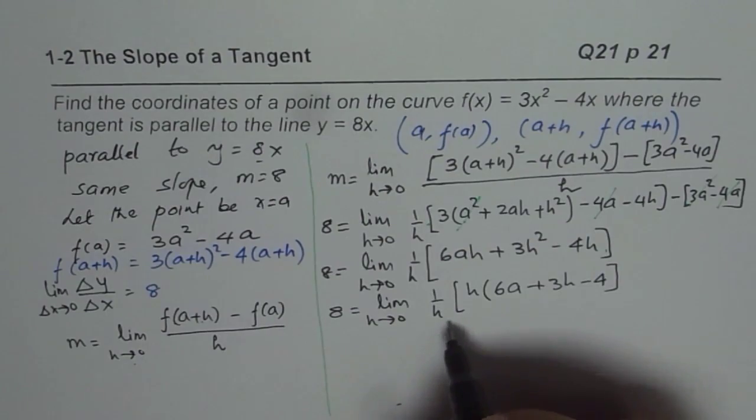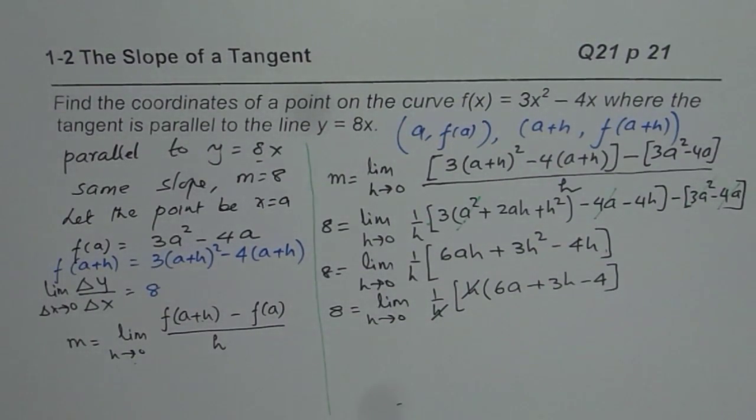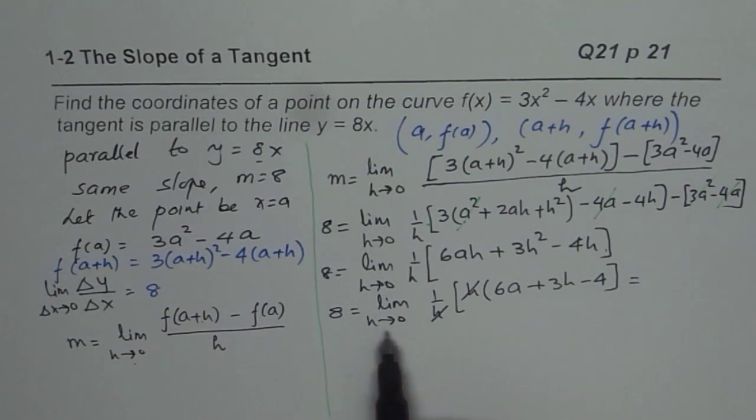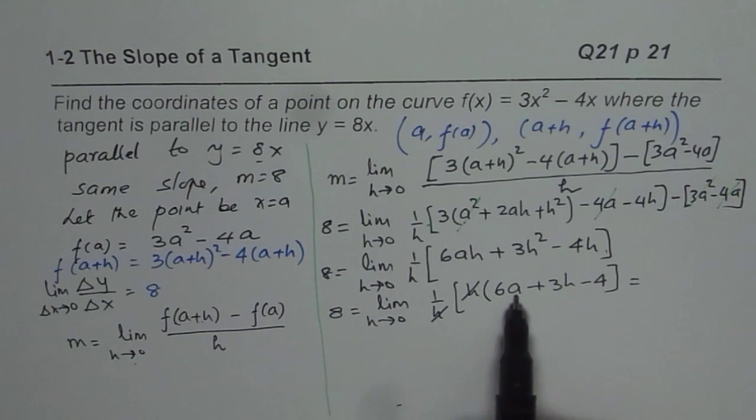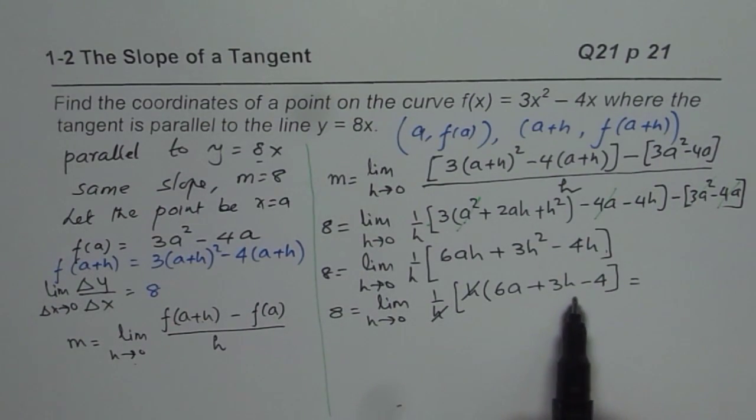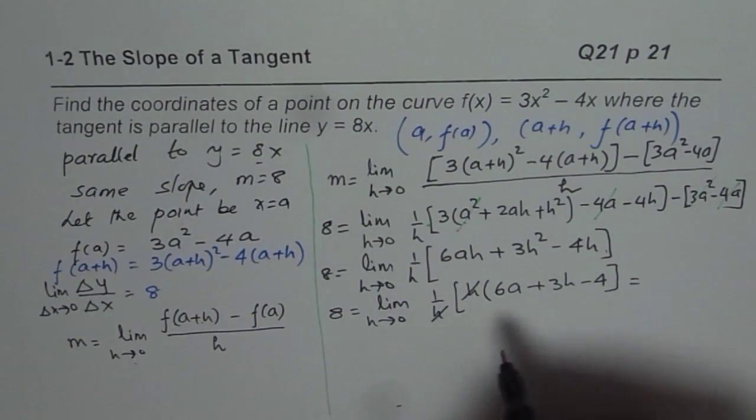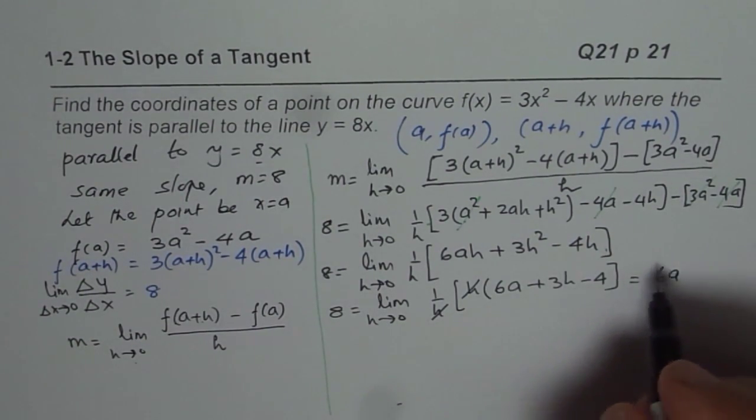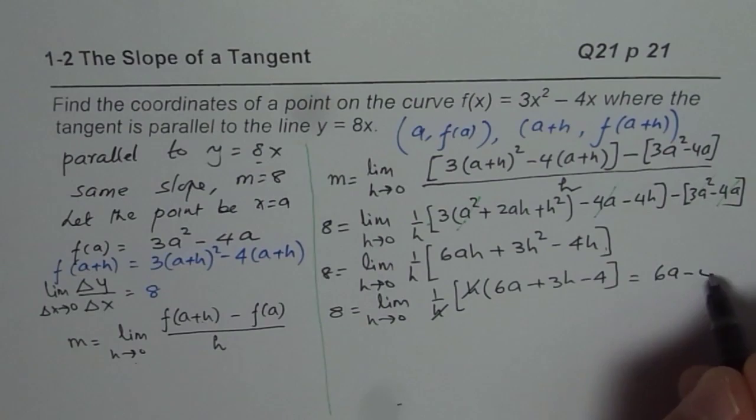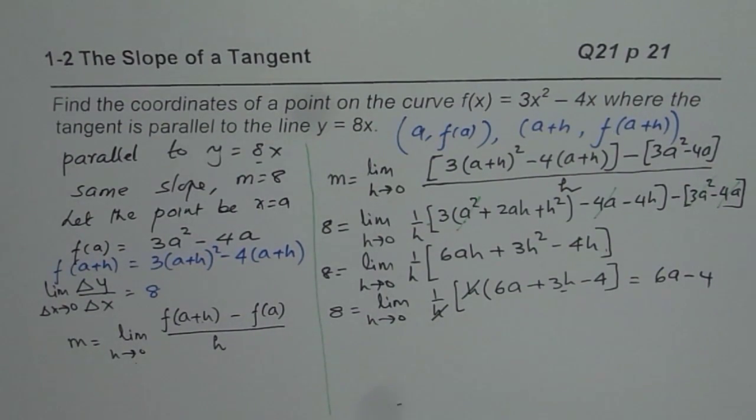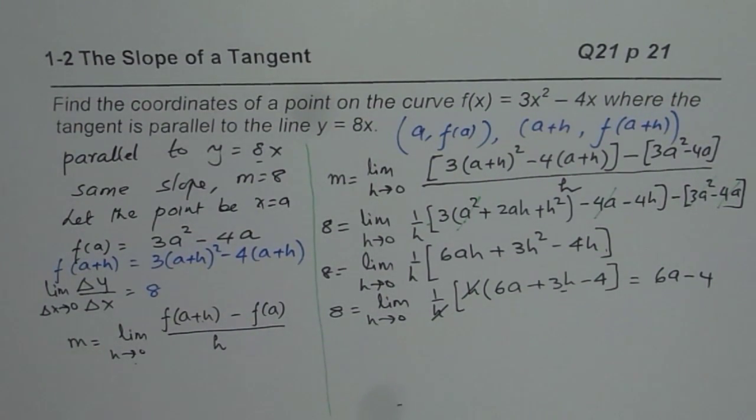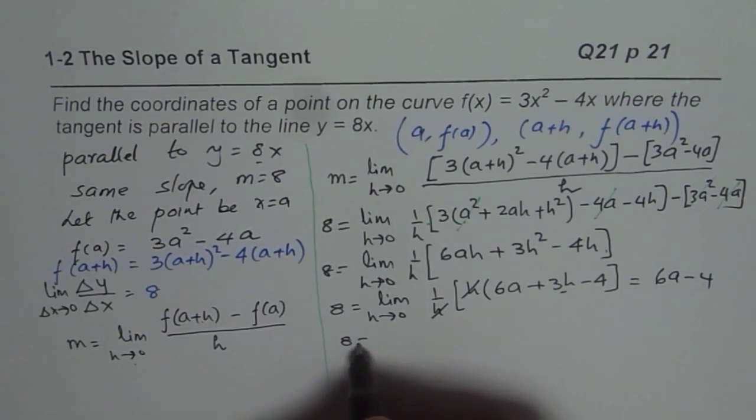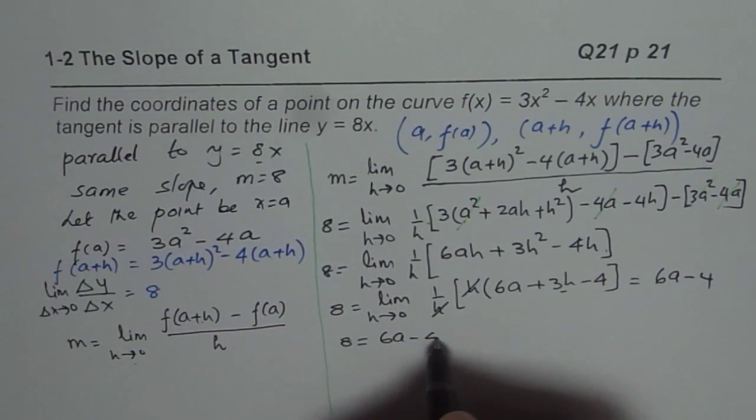Here, 1/h, and you can take out h common. So, you get 6a + 3h - 4. Since h is common, we just cancel this out. Now, at this stage, I could substitute the value of h as 0 in this equation. We get 6a + 0 - 4, since this term will become 0 if I write h as 0. That means we have equation 8 = 6a - 4.